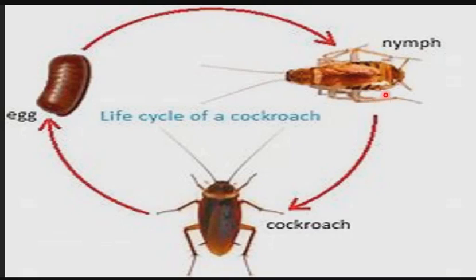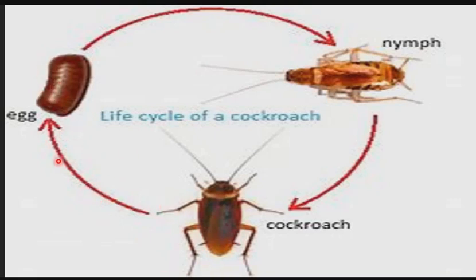The nymph gradually grows and becomes dark brown in color, and it will moult several times to undergo ecdysis. Several moultings will occur for it to emerge into a brown-colored adult. During the adult stage, wings appear in the last moult. The wings and body attain full size, and it takes about 40 to 60 weeks for the nymph to reach adult size. When the nymph reaches adult size, reproduction will commence again, in which the adult will start laying eggs and the life cycle continues.